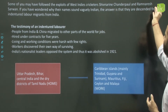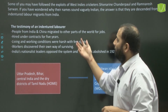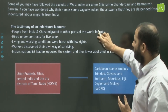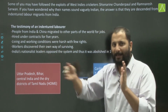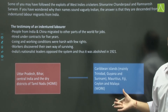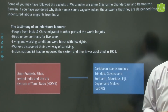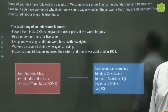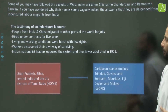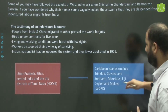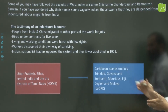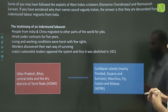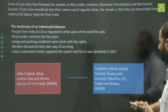Names like Shiv Narayan Chandrapal or Ram Naresh Sarwan reflect this heritage. People from India and China were taken to other parts of the world for jobs, hired under contracts of 5 years, with very harsh living and working conditions and very few rights. Workers discovered their own ways of surviving. India's nationalist leaders opposed this practice and it was eventually abolished in 1921.